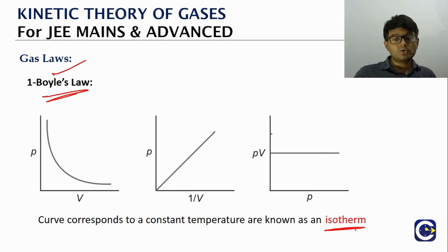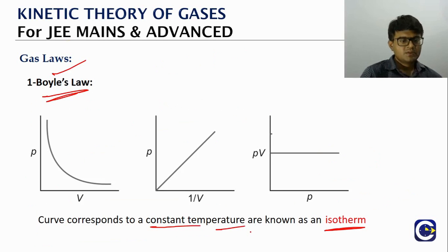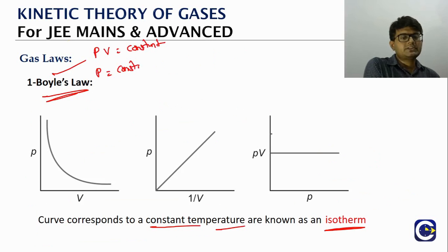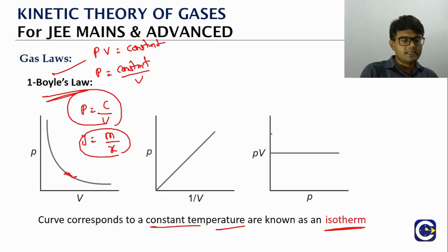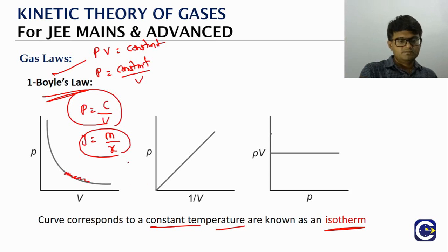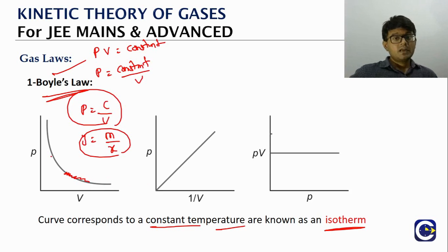Graphically, since P = C/V, a P vs V graph gives a decreasing curve — as V increases, P decreases, and as V approaches infinity, P approaches zero. For P vs (1/V), the relation is P = C×(1/V), which is like y = mx, giving a straight line passing through the origin.